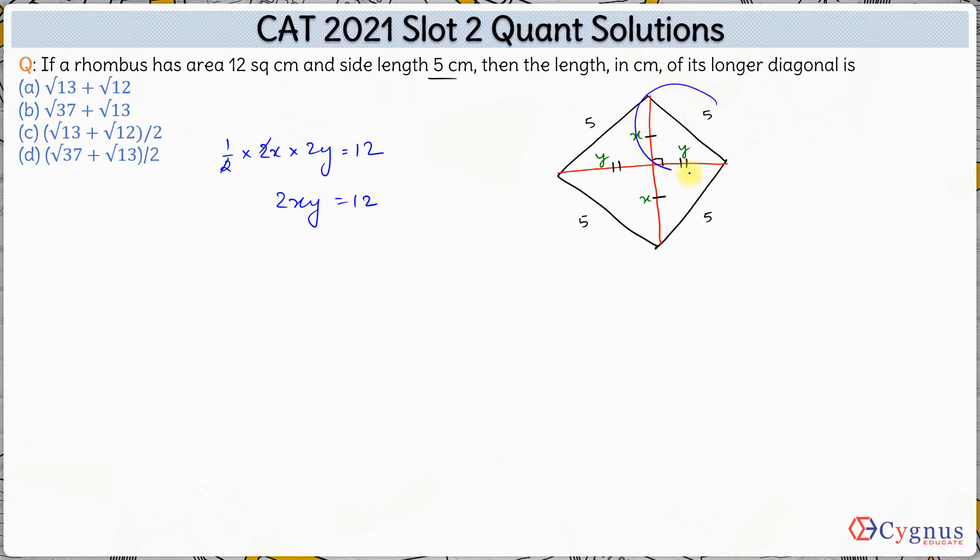Now if you look at this part here, this is a right angle triangle. Hence x square plus y square will be equal to 5 square which is 25. Let's say this is the first equation and this is the second equation.